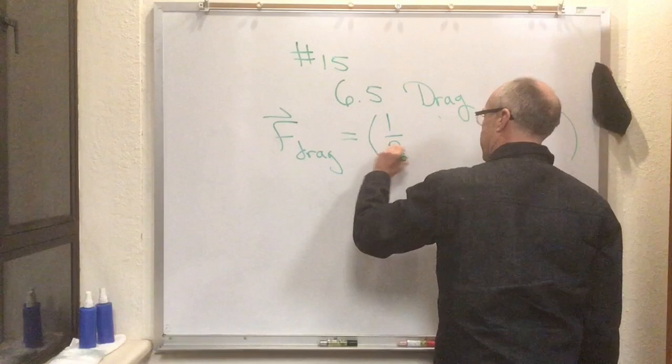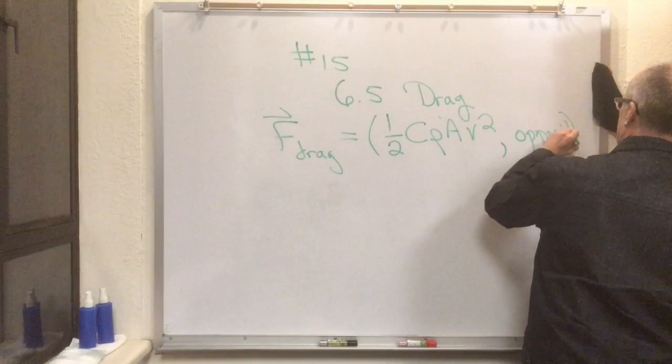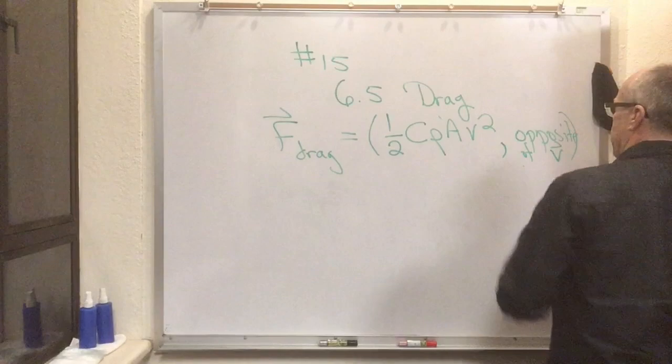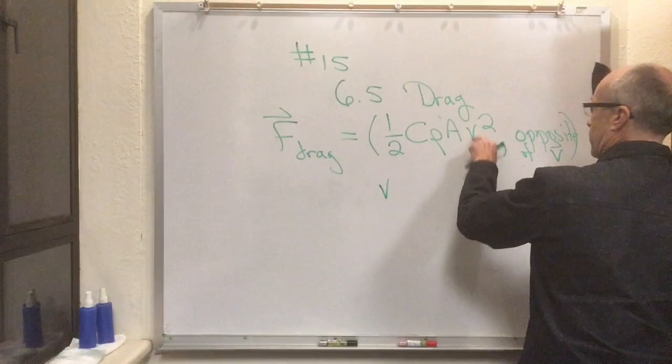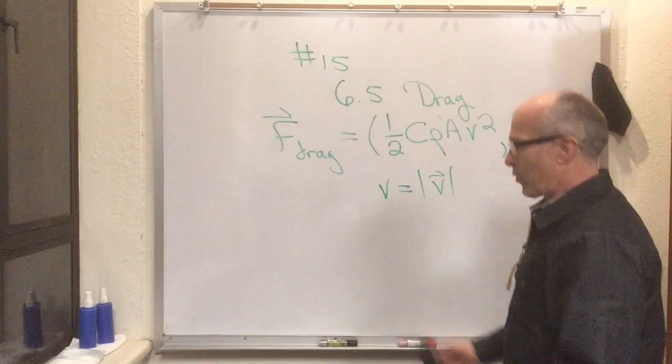The magnitude is 1/2 C rho A v squared, and the direction is opposite of the velocity v. What are all these things? This little v here with no vector symbol over it, that's just short for the magnitude of the velocity. The velocity is the velocity of the object in question.